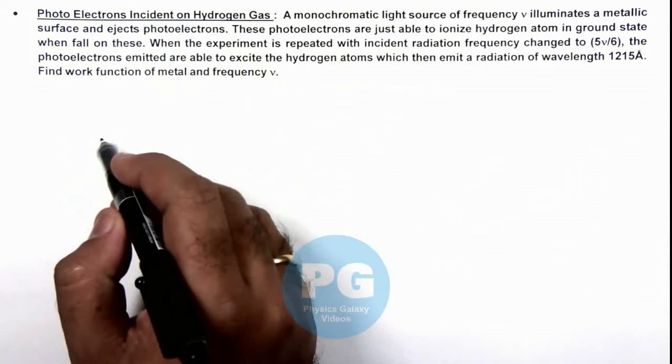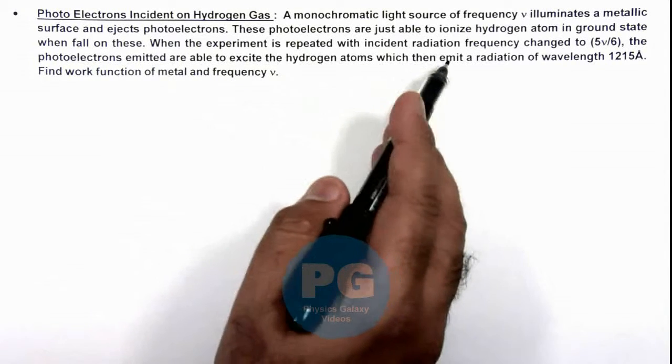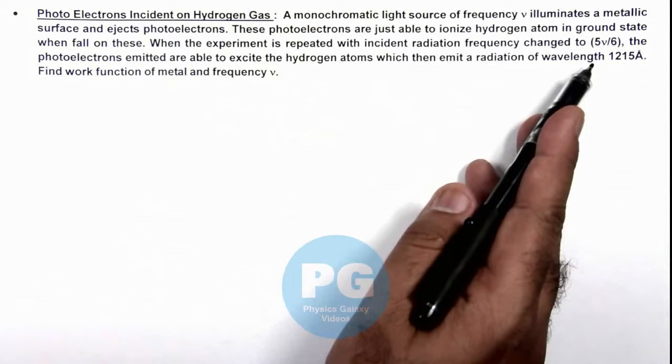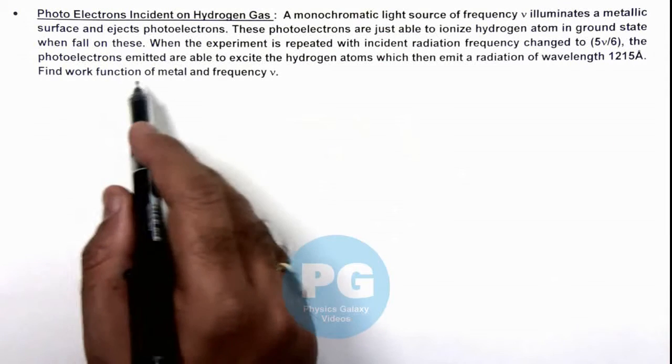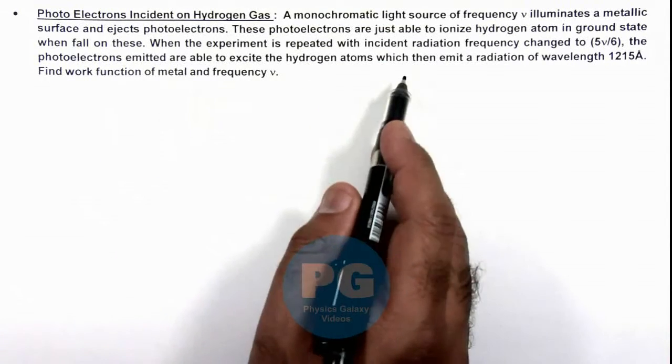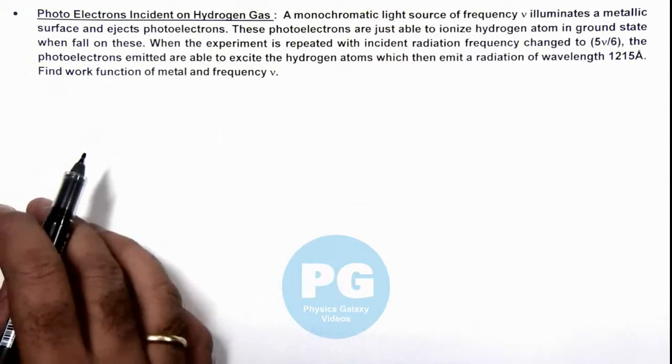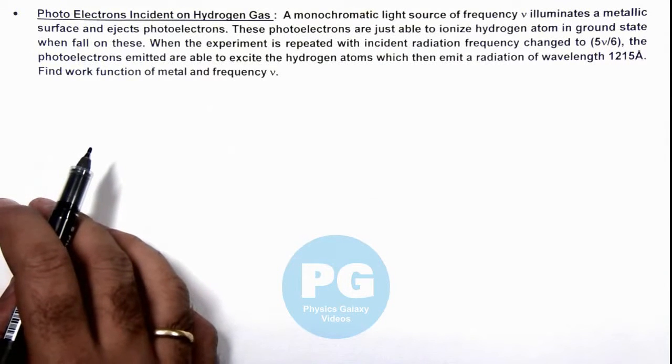When the experiment is repeated with incident frequency changed to φν/6, the photoelectrons emitted are able to excite the hydrogen atoms which then emit radiation of wavelength 1215 angstrom. So we are required to find the work function of metal and the frequency.